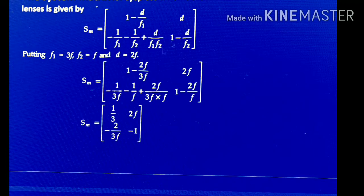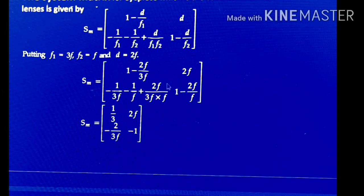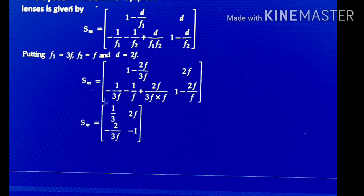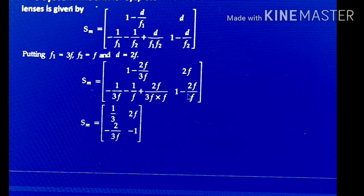Substituting: SM = [[1 − 2F/3F, 2F], [−1/3F − 1/F + 2F/(3F·F), 1 − 2F/F]]. After calculating: 1 − 2/3 = 1/3; the second element is 2F; the third element: −1/3F − 1/F + 2/3F = −2/3F; and the last element: 1 − 2 = −1.